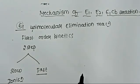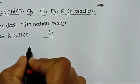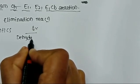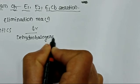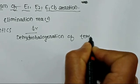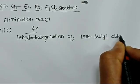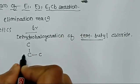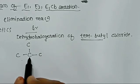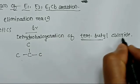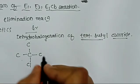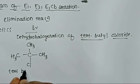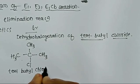Let us take one example for this category: dehydrohalogenation of tertiary butyl chloride. How to write the formula of tertiary butyl? Carbon 1, 2, 3 — it is tertiary because one carbon atom is attached with 3 carbon atoms. And the chloride is Cl. So you write CH3, CH3, and CH3. Its name is tertiary butyl chloride.